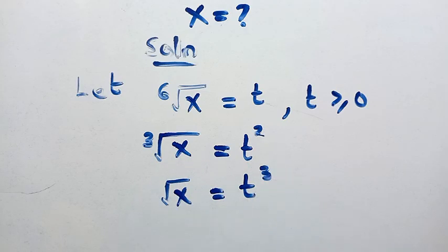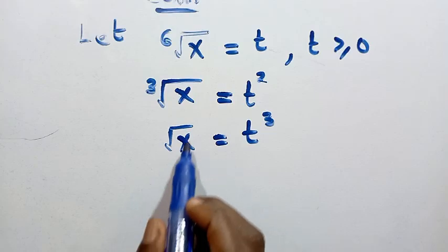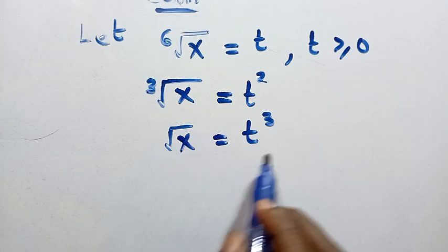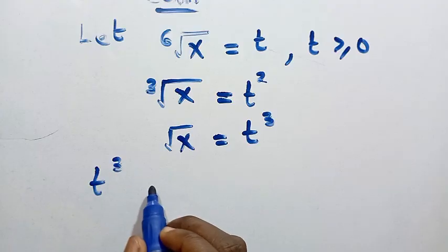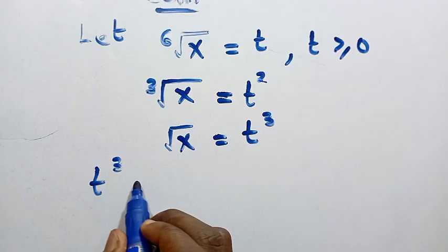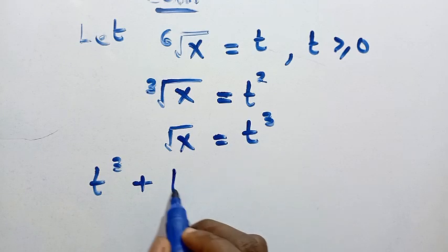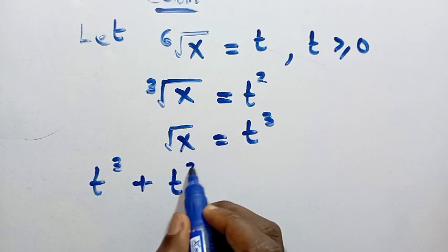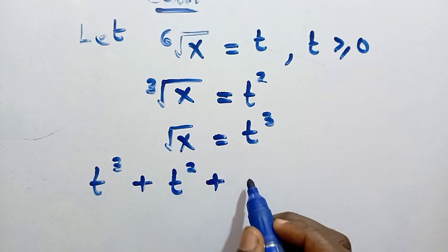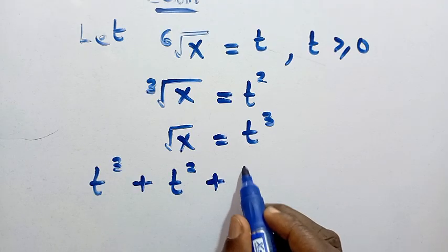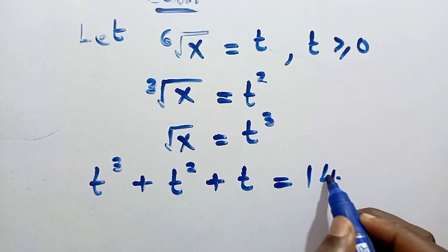We substitute back into the original equation. The square root of x becomes t cubed, the cube root of x becomes t squared, and the sixth root of x becomes t, giving us t cubed plus t squared plus t equals 14.